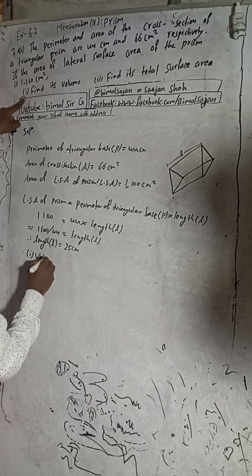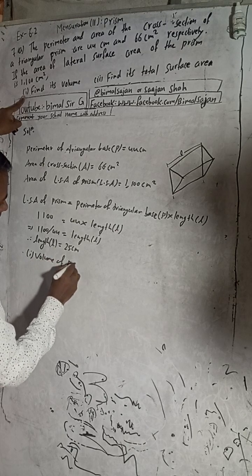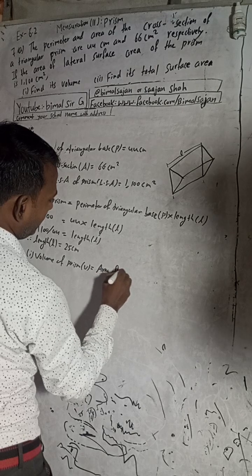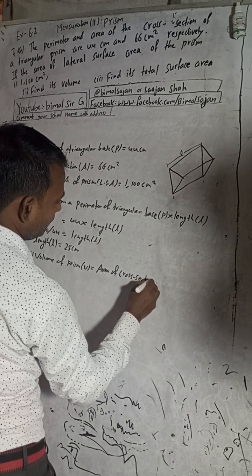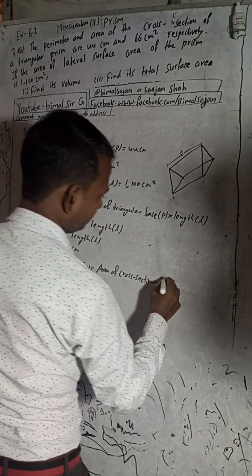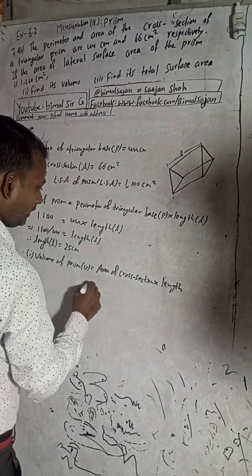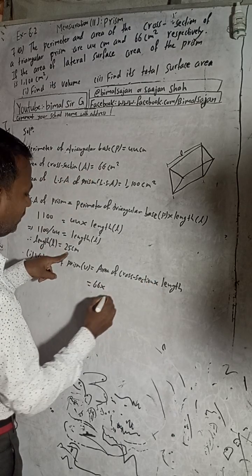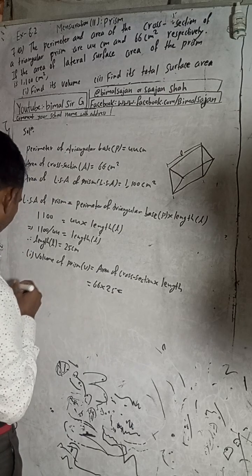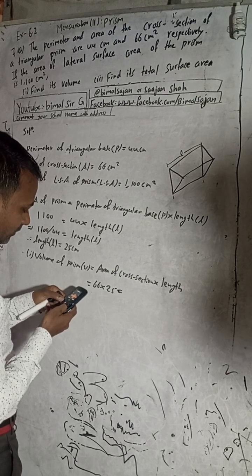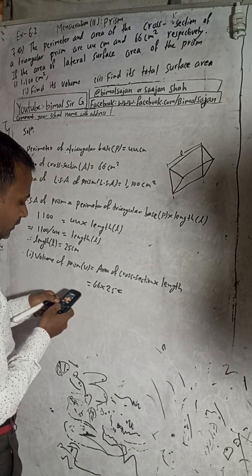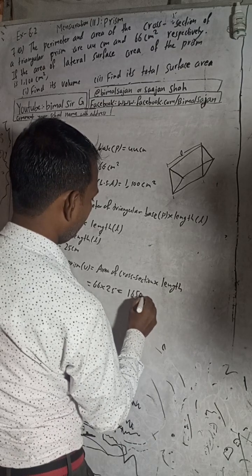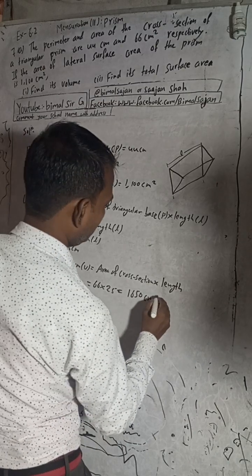Number one: Volume of prism = area of cross-section × length. The area of cross-section is 66 cm² and the length we found is 25 cm. So, volume = 66 × 25 = 1650 cm³. That is the volume.